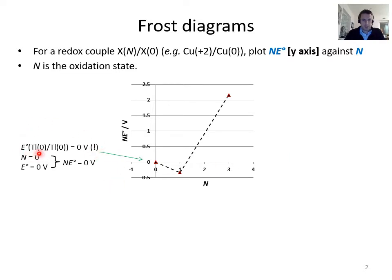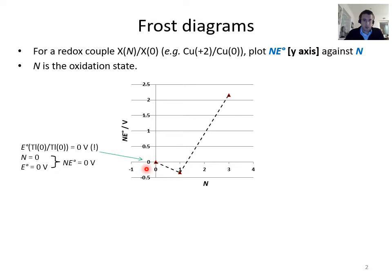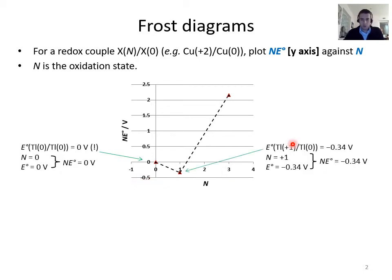Let's go through an example for tantalum. The first point on the diagram is (0, 0): the oxidation state is 0, and the oxidation state times the standard reduction potential is also 0. That's not surprising because 0 times anything is 0, and the standard reduction potential of Ta⁰ to Ta⁰ involves no change of electrons, so it equals 0. Any element in oxidation state zero always appears at y = 0, x = 0 on a frost diagram.